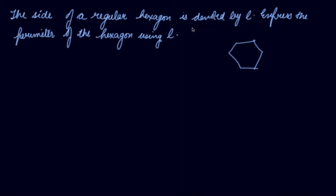The side of a regular hexagon is denoted by L. The sides of hexagon are L. Express the perimeter of hexagon using L. We have taken the side of hexagon as L. L is the side.